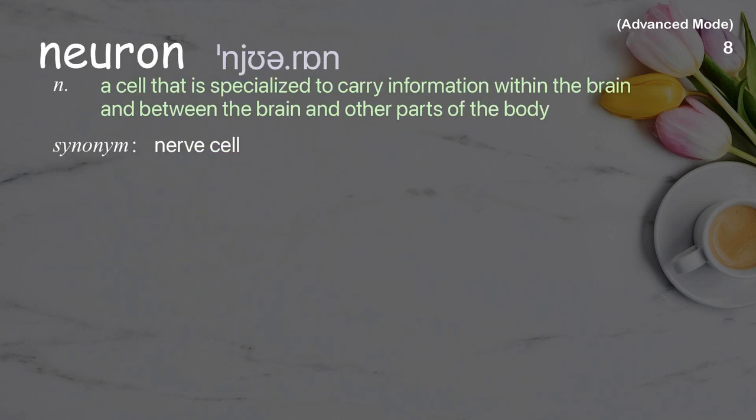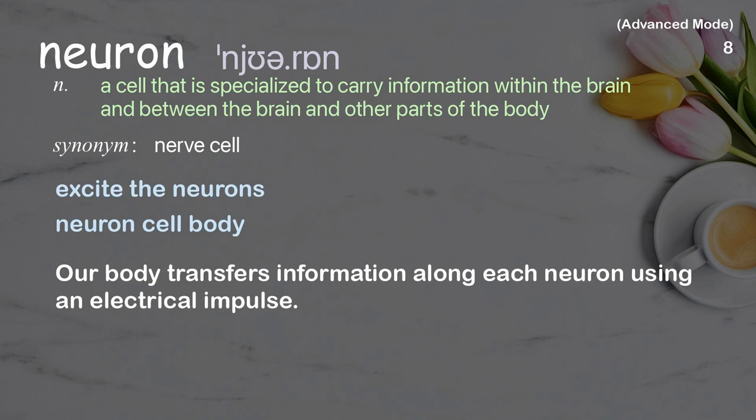Neuron: a cell that is specialized to carry information within the brain and between the brain and other parts of the body. Examples: excite the neurons, neuron cell body. Our body transfers information along each neuron using an electrical impulse.